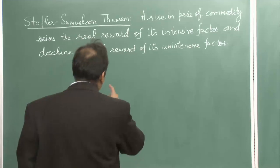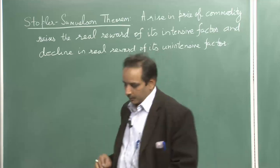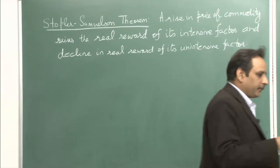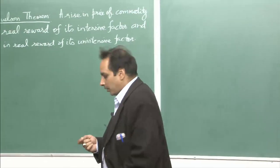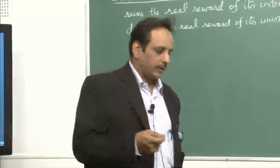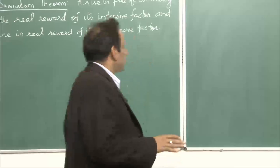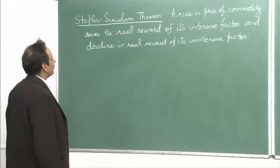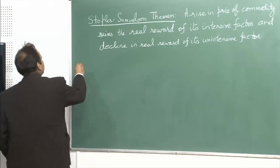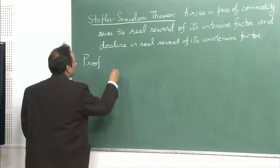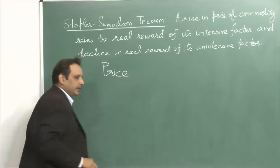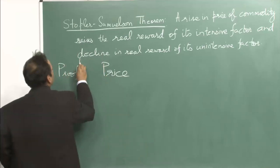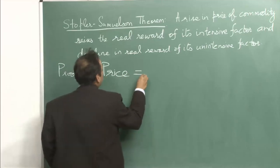We will prove this theorem — it will be a long proof — and also prove the magnification effect, which says that the rise in price of a commodity magnifies the impact on factor returns. The proof starts with the assumption that there is perfect competition in product and factor markets, so that in the long run prices are equal to average cost.